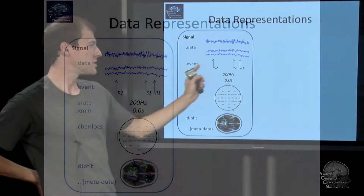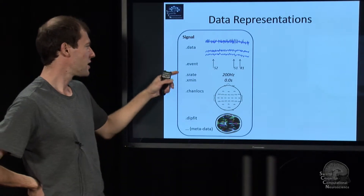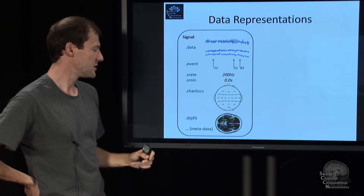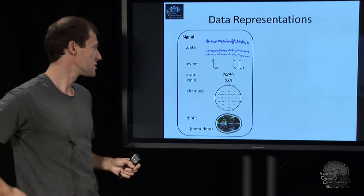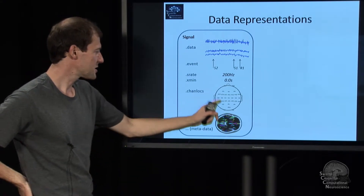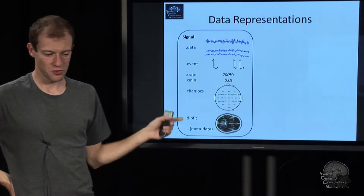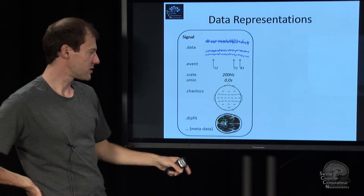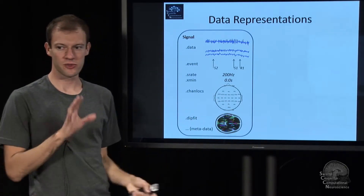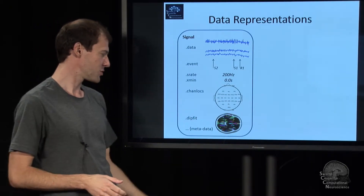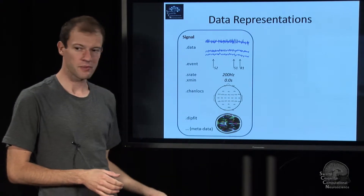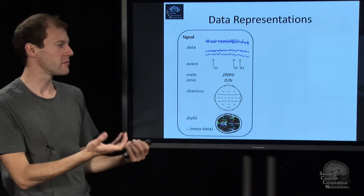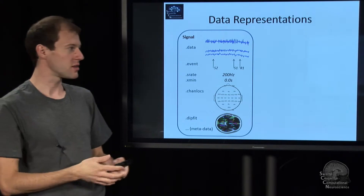The EEGLAB struct has an event field representing where events are as a struct array, a sampling rate field, and the time of the first data point in seconds. The rest is metadata that you may or may not look at, such as where your channels and components are located. It's extensible, so you can dump in whatever intermediate things you want to store and look up later in another filter.